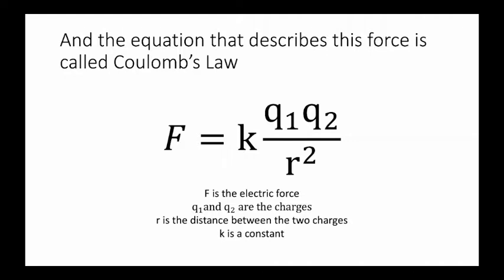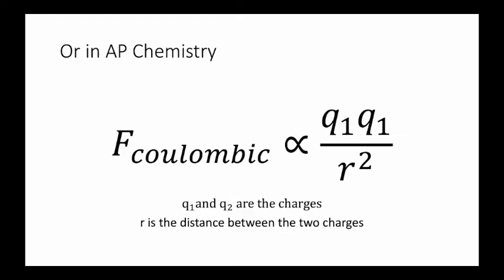This is how you'll often see it in a physics course. In AP Chem, we're mostly concerned about the relationship between the force and the inverse square of the distance. We don't have the constant here. We just need to know that the Coulombic force is proportional to the product of the charges—proton and proton, or proton and electron, or electron and electron—divided by the square of the distance.